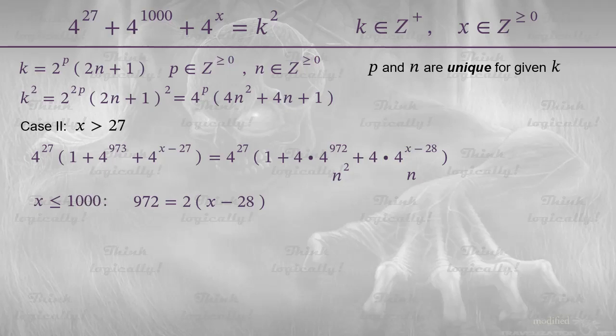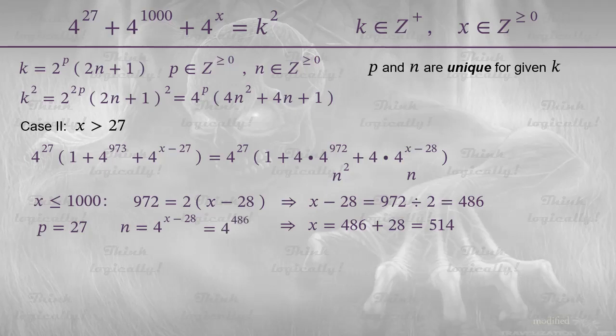And we solve the equation for x and get x equals 514. No upset. This time, the obtained number really exceeds 27 and doesn't exceed 1000. And we need to find the value of k. So, we get p equals 27, n equals 4 to the power of x minus 28. It equals 4 to the power of 486. Now, we can apply the formula for k. And after some simplifications, we find out that k equals 2 to the power of 1000 plus 2 to the power of 27.